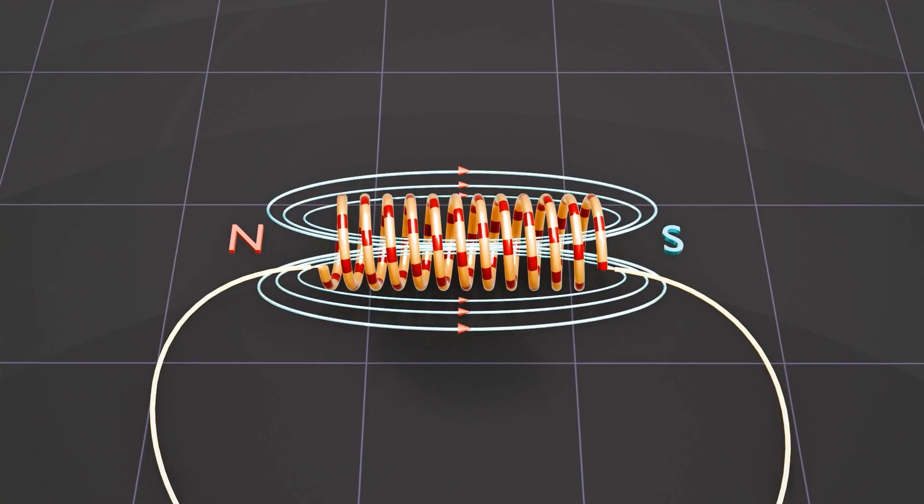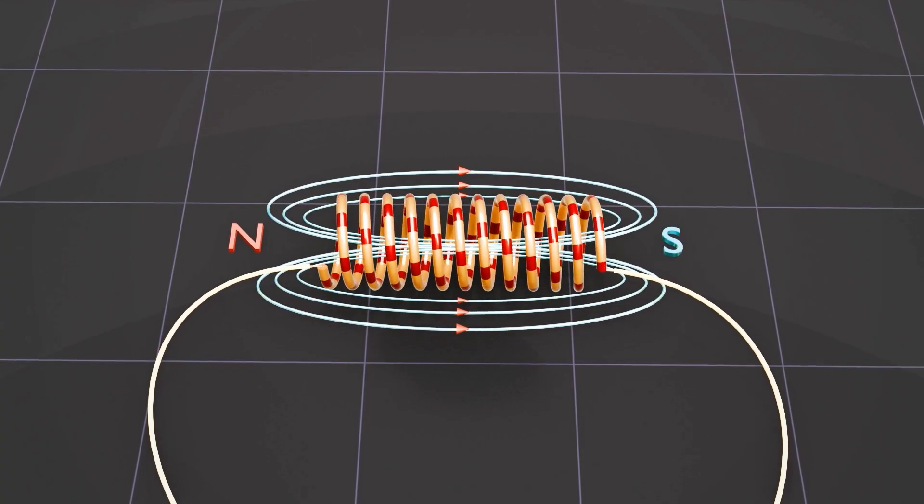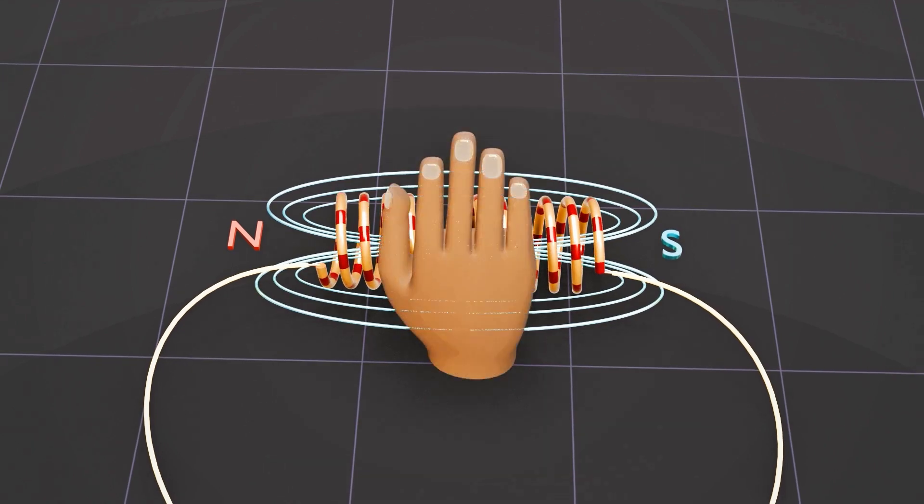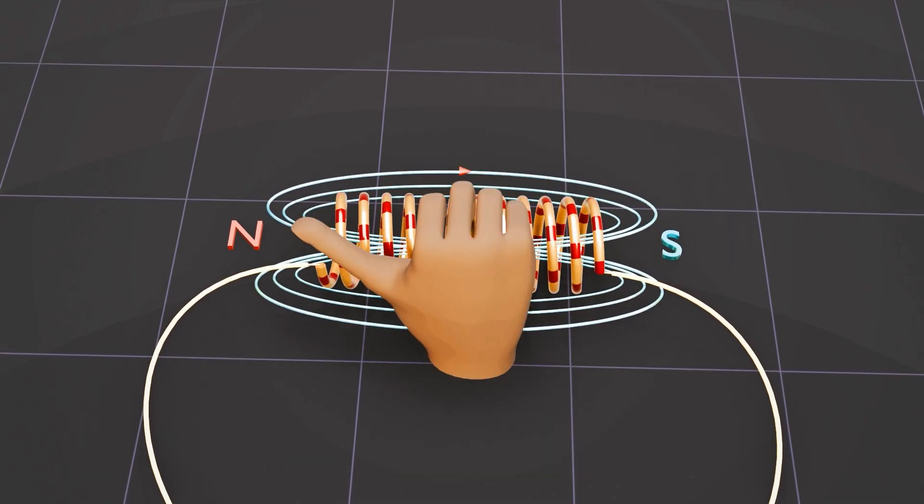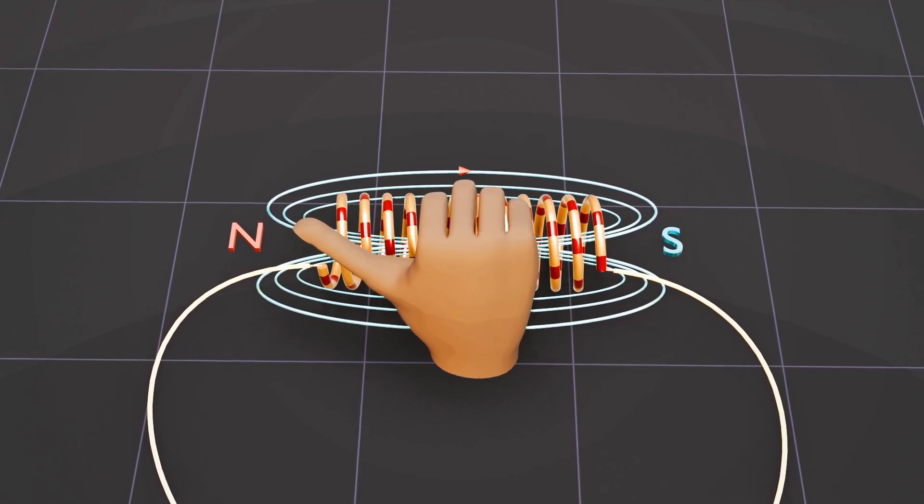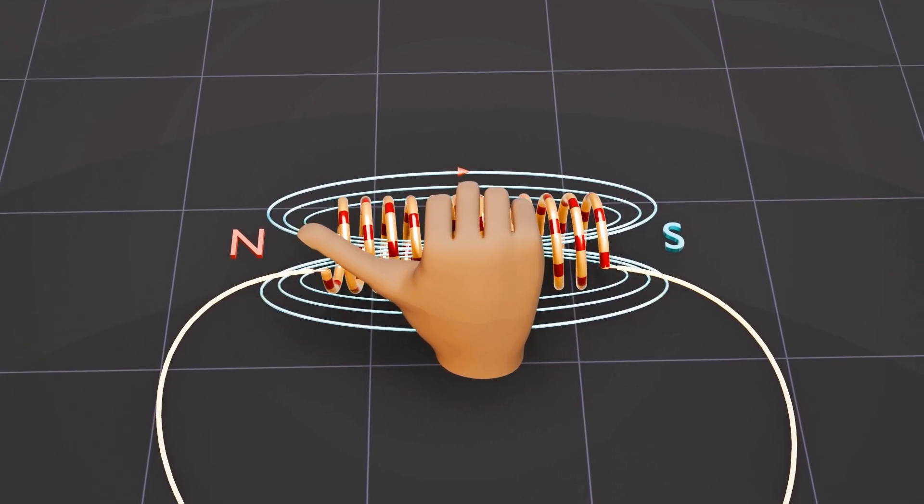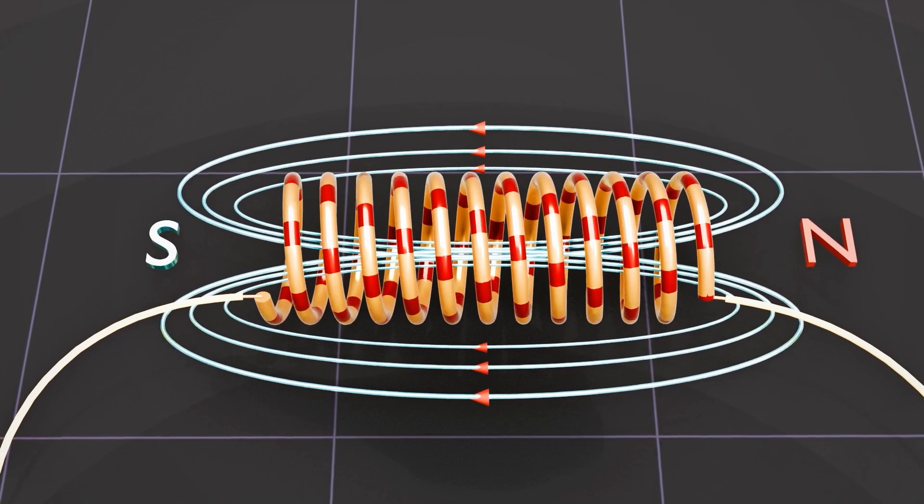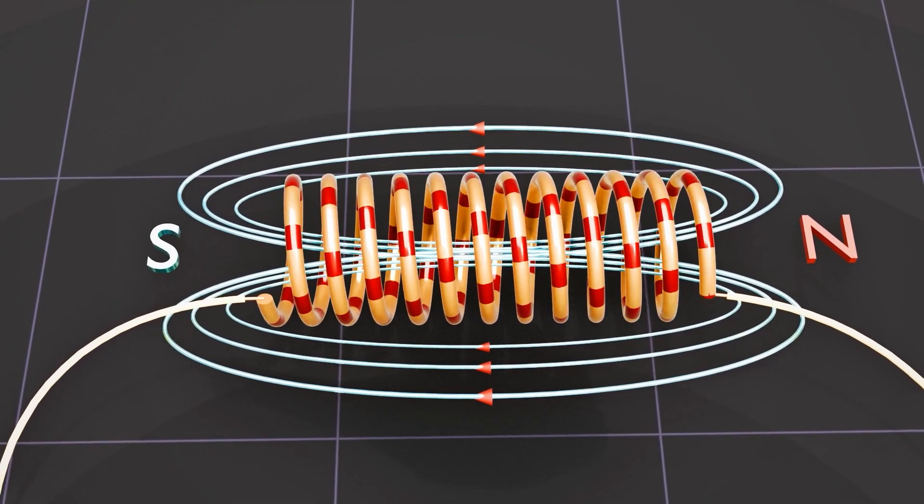You can determine the direction of the magnetic field produced by a solenoid using the right-hand rule. If you hold the coil with your right hand and your fingers follow the direction of the current, your thumb points in the direction of the magnetic field. Changing the direction of the electric current will change the direction of the magnetic field.